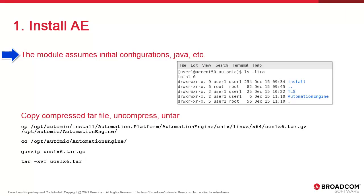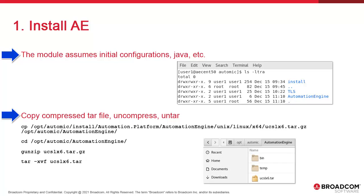All the usual assumptions regarding Java and the install package still apply. We've created a directory called Automation Engine with capitalized first letters. We copy the ucslx6.tar.gz from the installation package. As for other components, make sure you grab the right file based on your operating system and distribution. Then we'll unzip the file and untar.